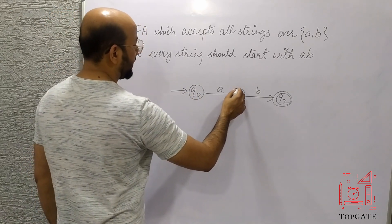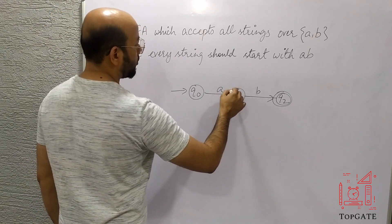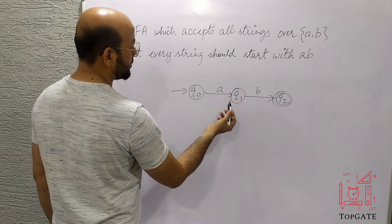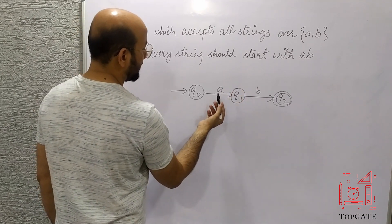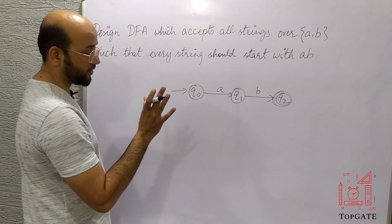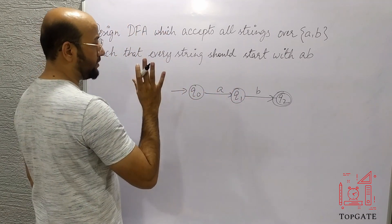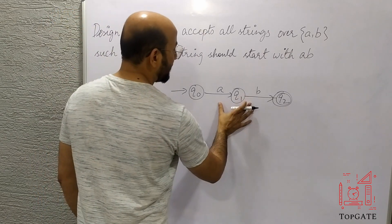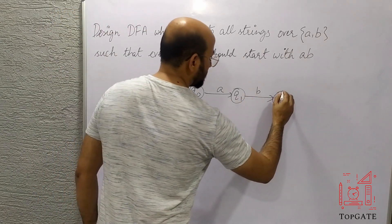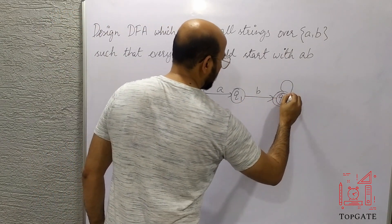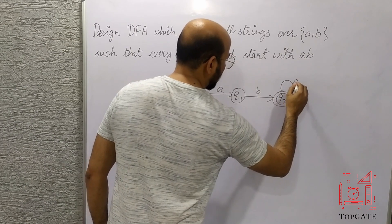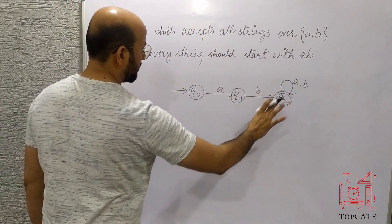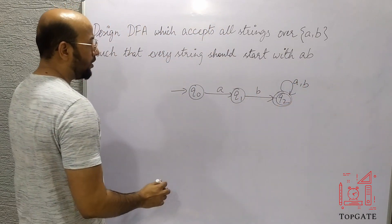At q1 I also cannot add a self-loop on 'a', because I need 'ab' at the start of the string — 'ab' must appear at the start at any cost. After 'ab' I can have anything, so at q2 I'll add a self-loop on both 'a' and 'b'. That part is now done.